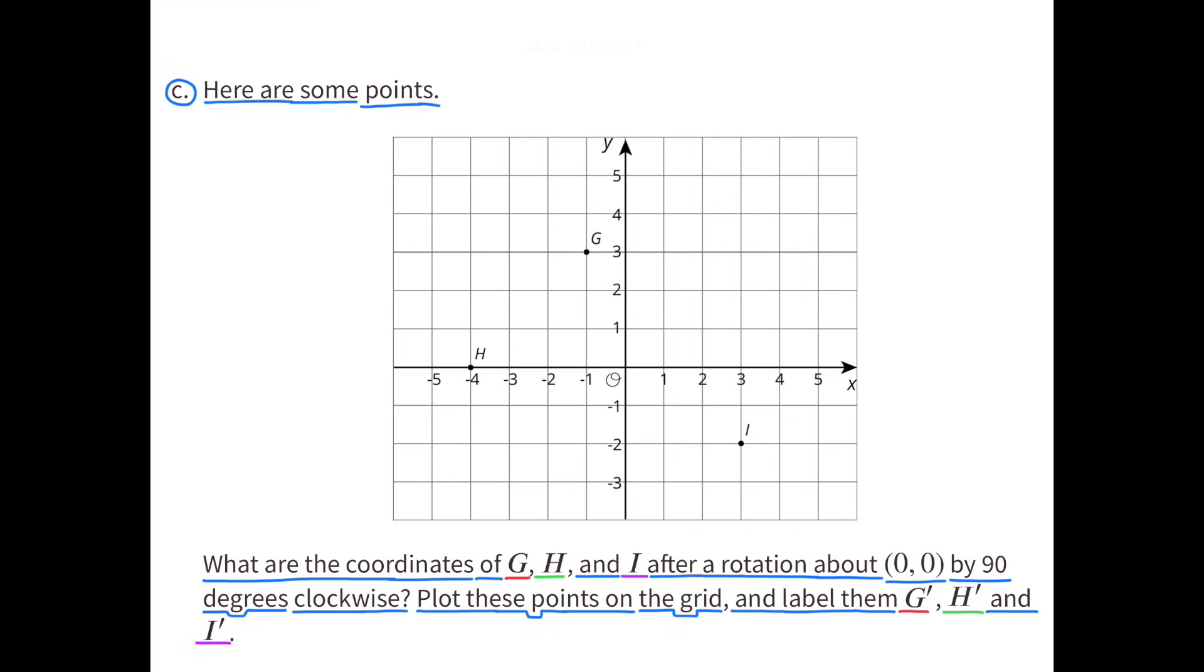C. What are the coordinates of G, H, and I after a rotation about coordinates 0 and 0 by 90 degrees clockwise? Plot these points on the grid and label them G', H', and I'.